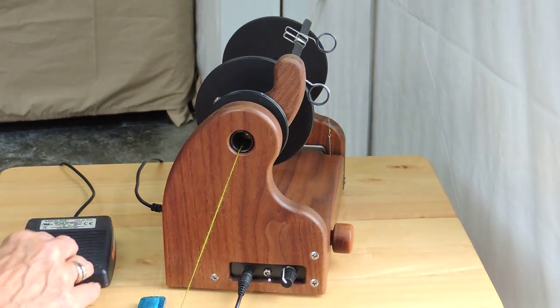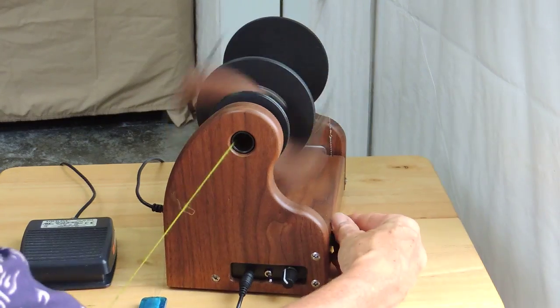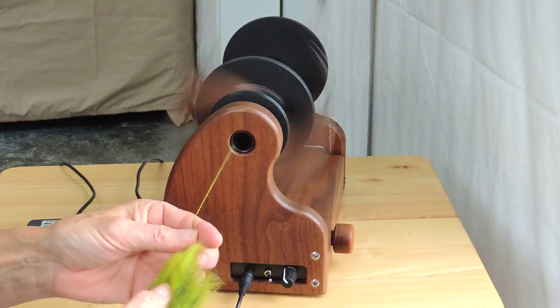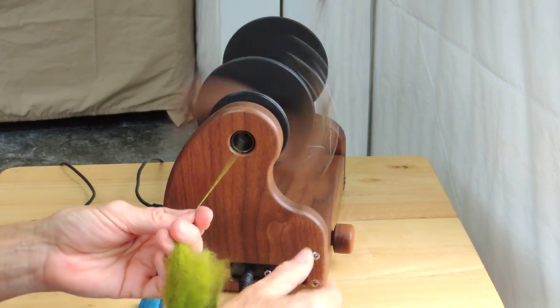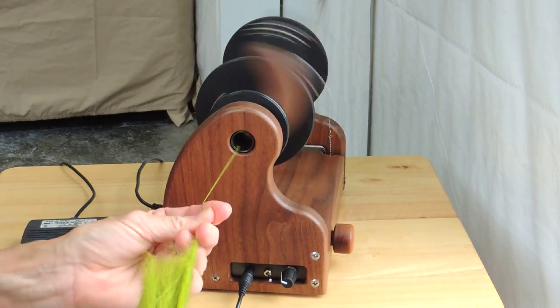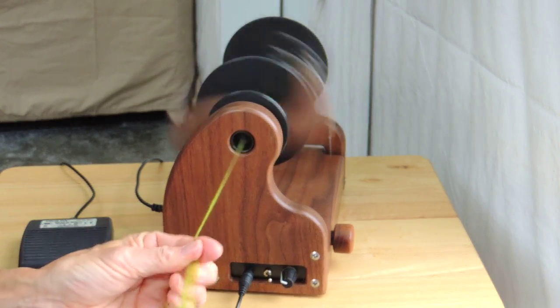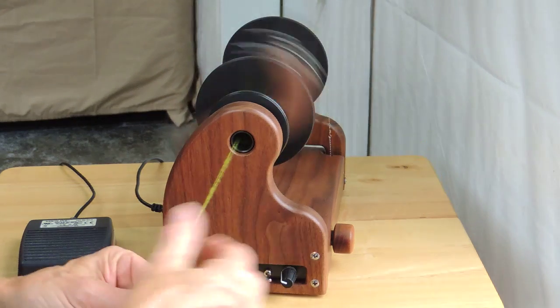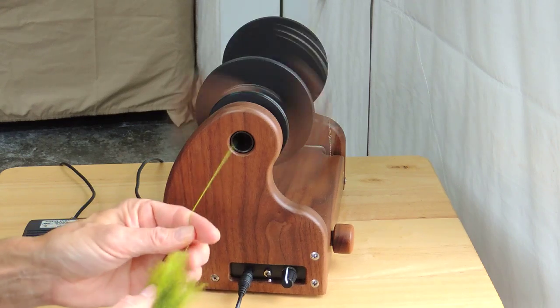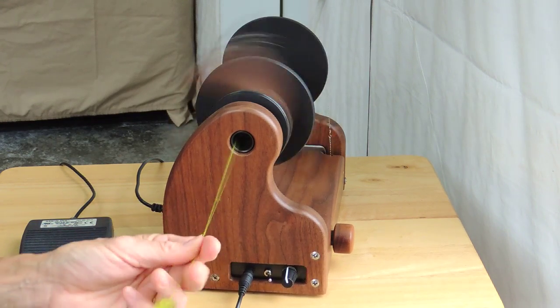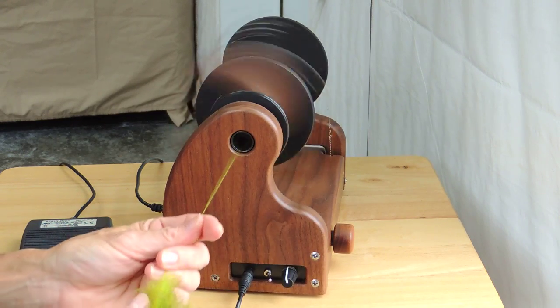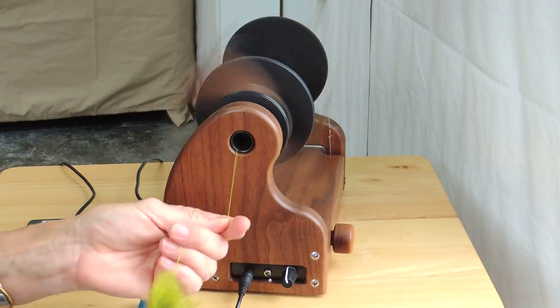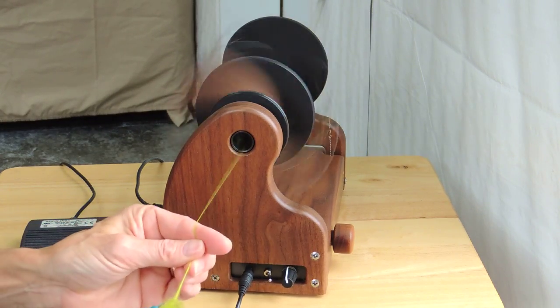The speed control here allows me to change the kind of spinning I'm doing. If I want to spin thick I might slow my flyer down and draft out a little bit more fiber and I could get a thicker yarn. If I'm wanting to spin finer of course I need to put a lot of twist in so then I can just increase the speed and spin a much finer yarn.